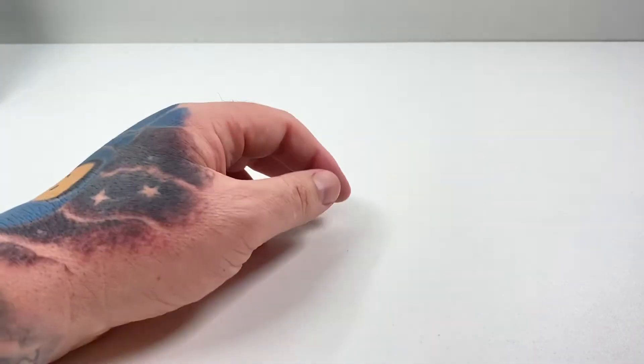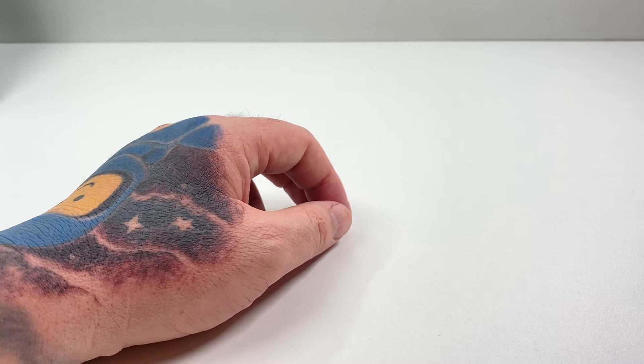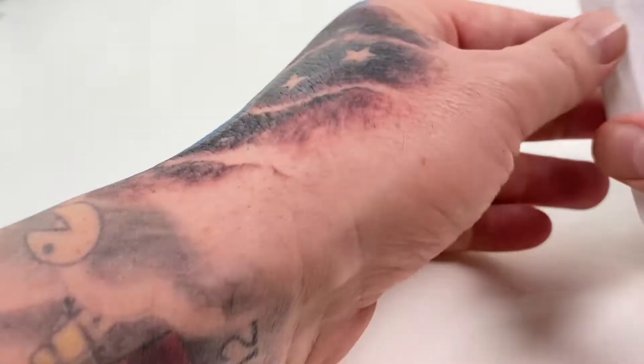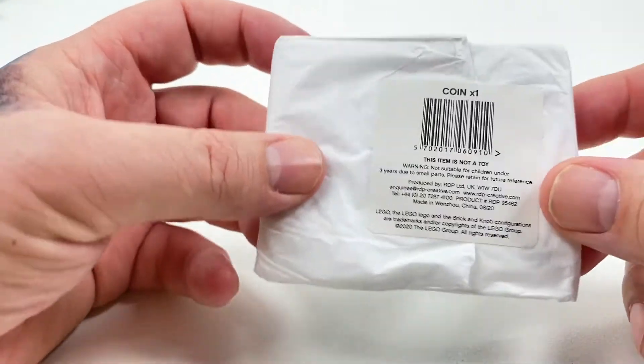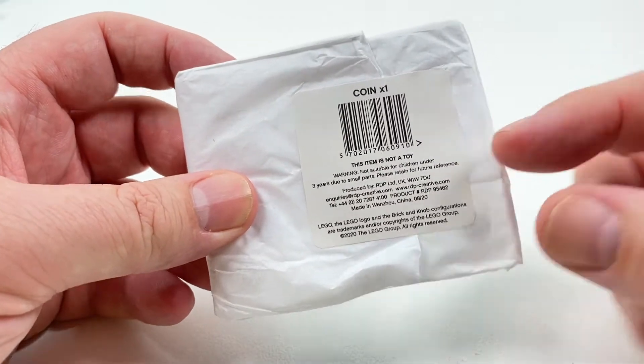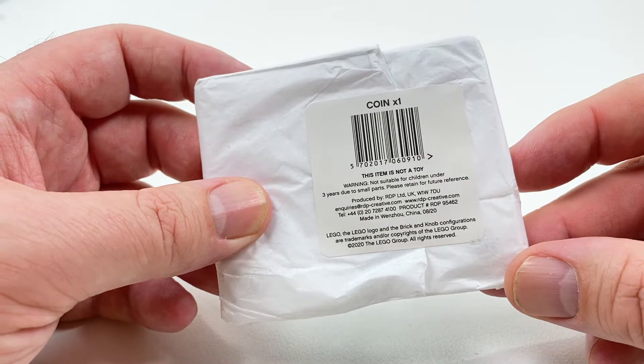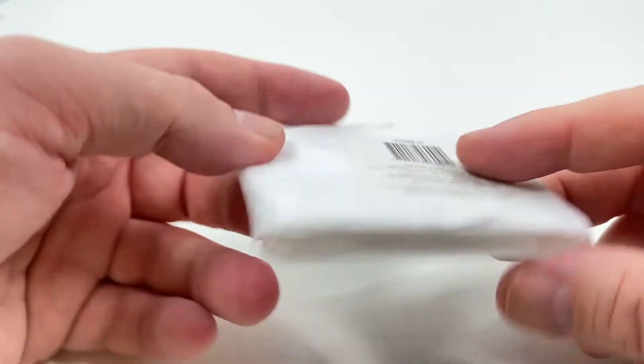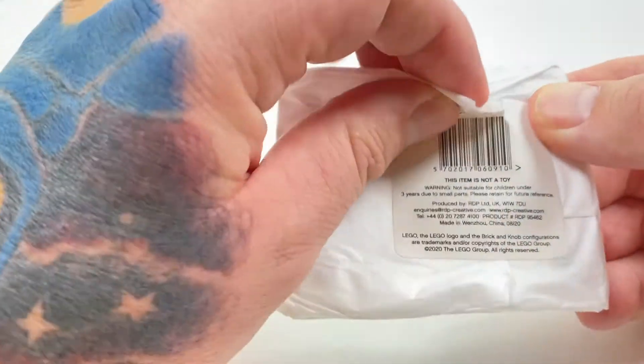I haven't opened it up yet. It is in crepe paper, so we'll get that open right now. As I said, it's in crepe paper, but it's actually heavy. Coin x1, I mean thank you for letting us know that. And it is not a toy, so it has been produced by another company for LEGO. But this is pretty cool and I am going to open it up because curiosity is getting the better of me, so let's do this together.